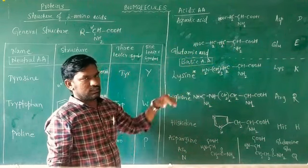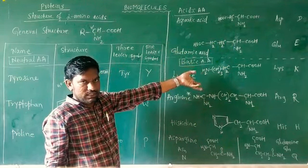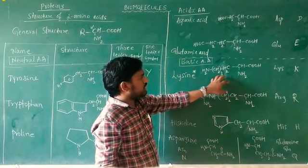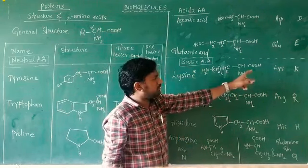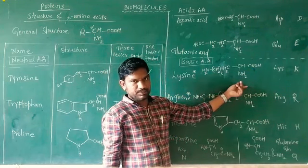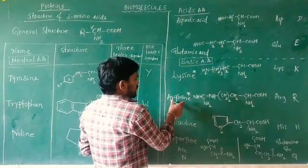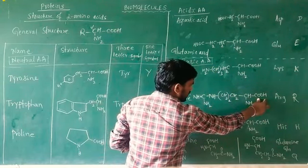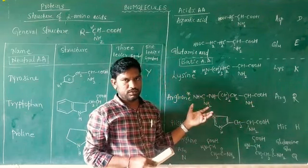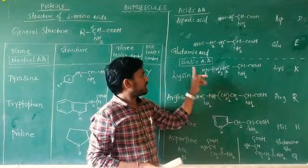Basic amino acids are just the opposite — more NH2 groups are present compared to acidic COOH groups. For example, lysine has one COOH group but two NH2 groups, making it basic. Arginine has one acidic group but four amino groups, so basic character is more compared to acidic. It is a basic amino acid. R for arginine is CH2-CH2-NH-C(=NH)-NH2.